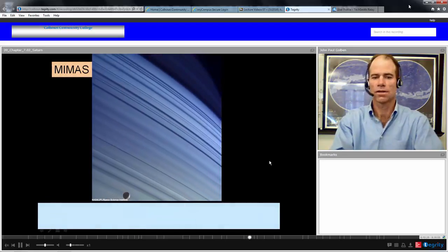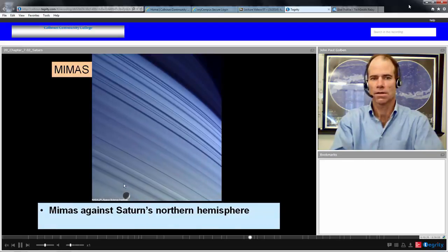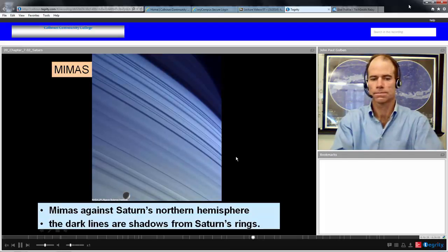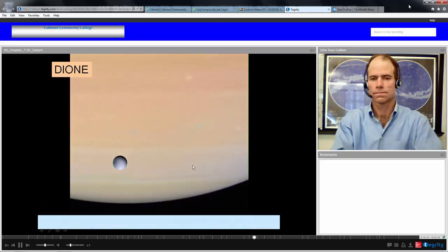Here's a picture of the moon Mimas against the ring system or Saturn's northern hemisphere. The shadows on the northern hemisphere are from the ring system. Here's Dione, also against the planet Saturn in the background. Great picture.